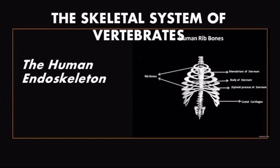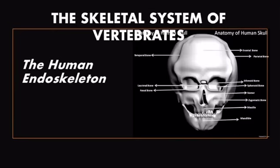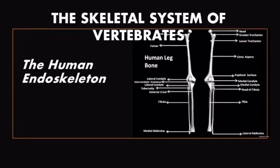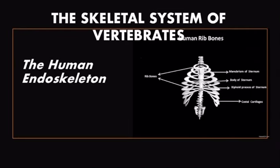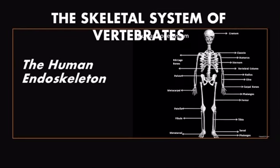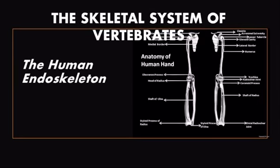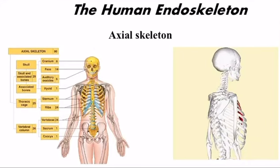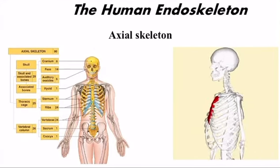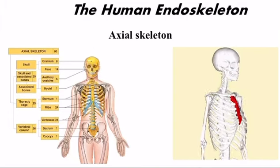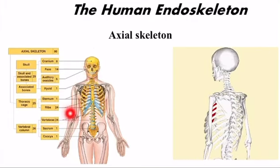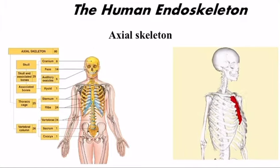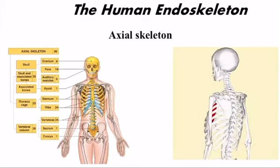The human endoskeleton consists of bones and cartilage, and the adult human body has 206 bones. The human endoskeleton has two major parts: the axial skeleton and the appendicular skeleton. The axial skeleton — shown in yellow in this diagram — is made up of the skull, vertebral column, sternum, and ribs.